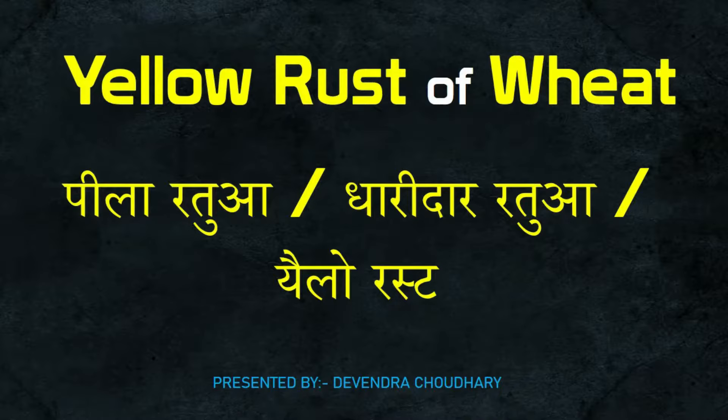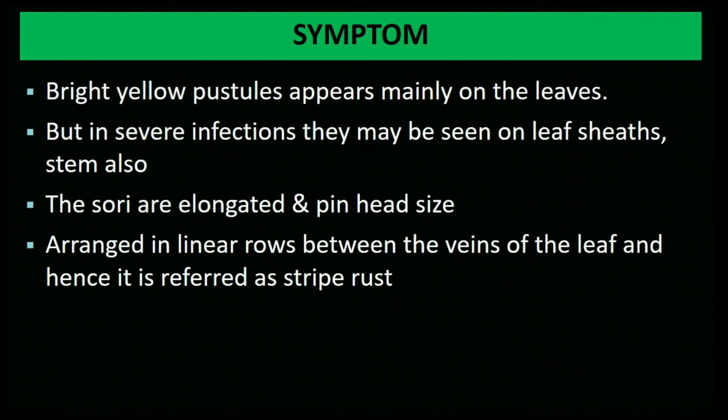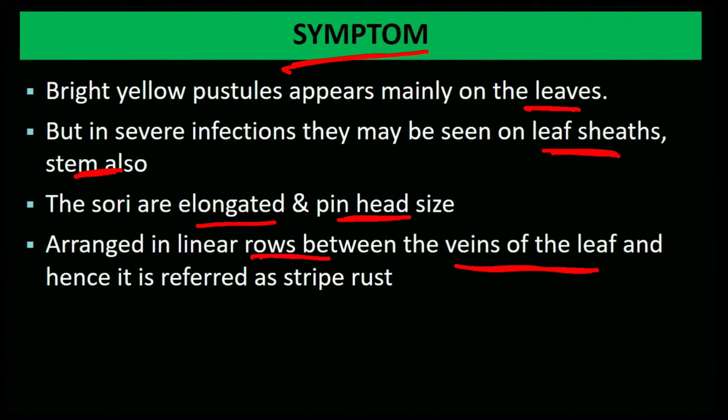Yellow rust of wheat is also known as stripe rust. It is caused by Puccinia striiformis. Symptoms: Bright yellow pustules appear mainly on leaves. In severe infection, they may also be seen on the leaf sheath and stem. The sori are elongated and pin-head size, arranged in linear rows between the veins.